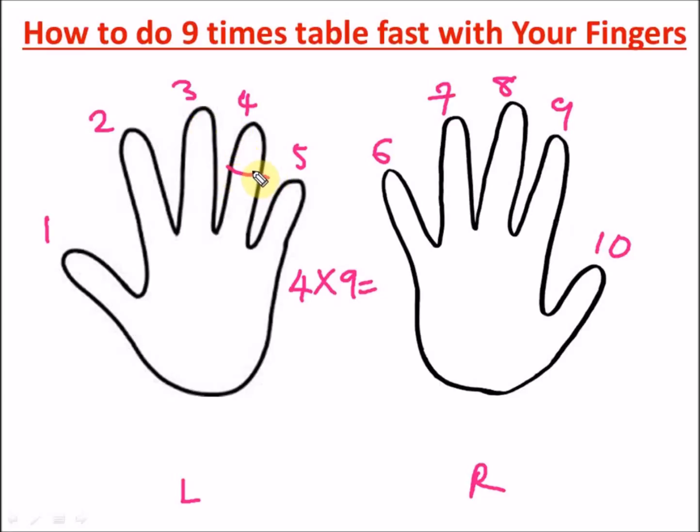Where is four on your fingers? This is four, so you put it down. When you cross it out, you count on your left side how many fingers are there: one, two, three, and you write down three. Now to get the second digit of the answer, you count on your right side how many fingers you have: one, two, three, four, five, six, and you write six. You can see four times nine is equal to 36.